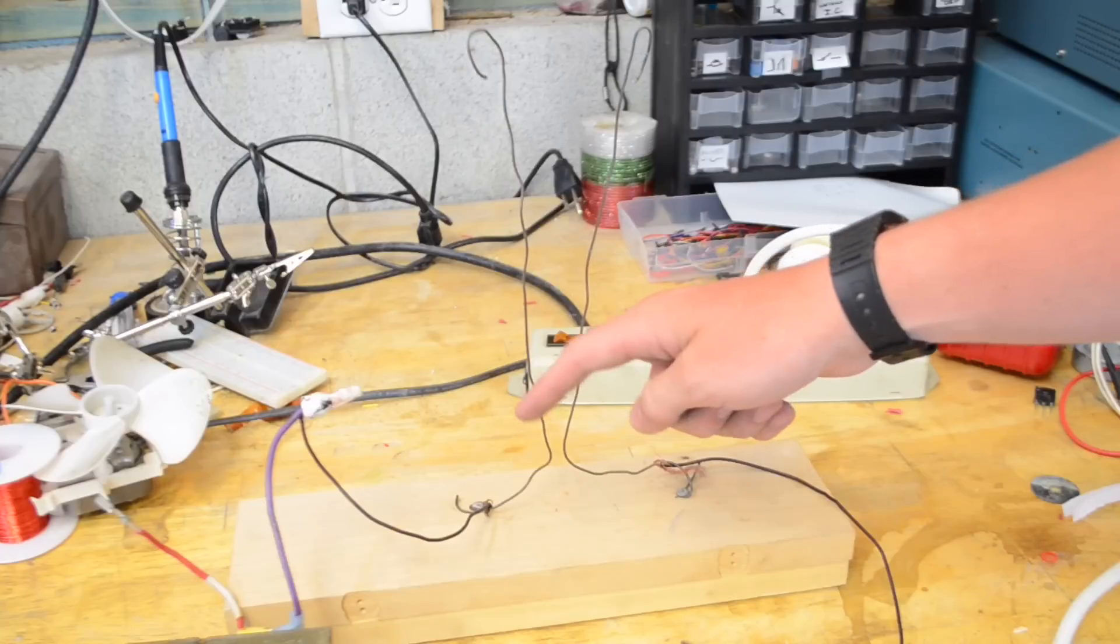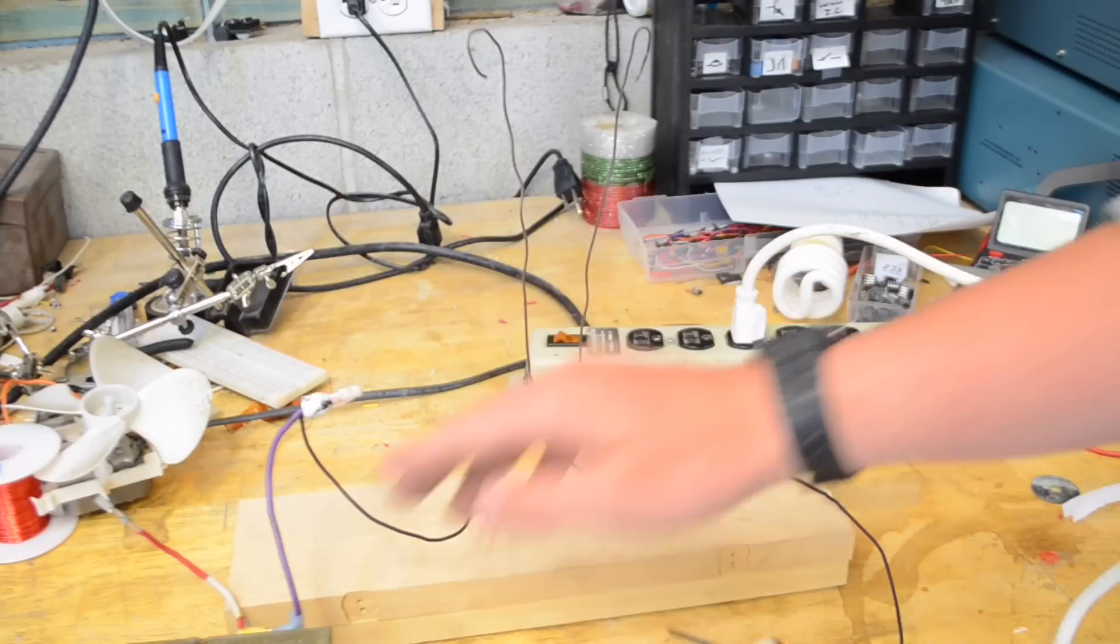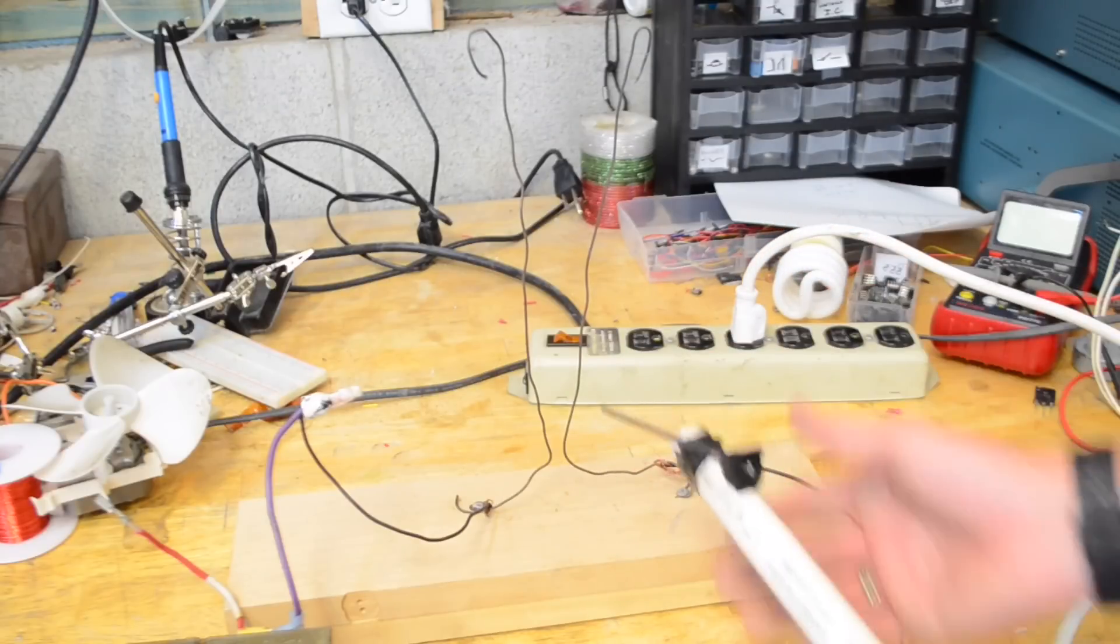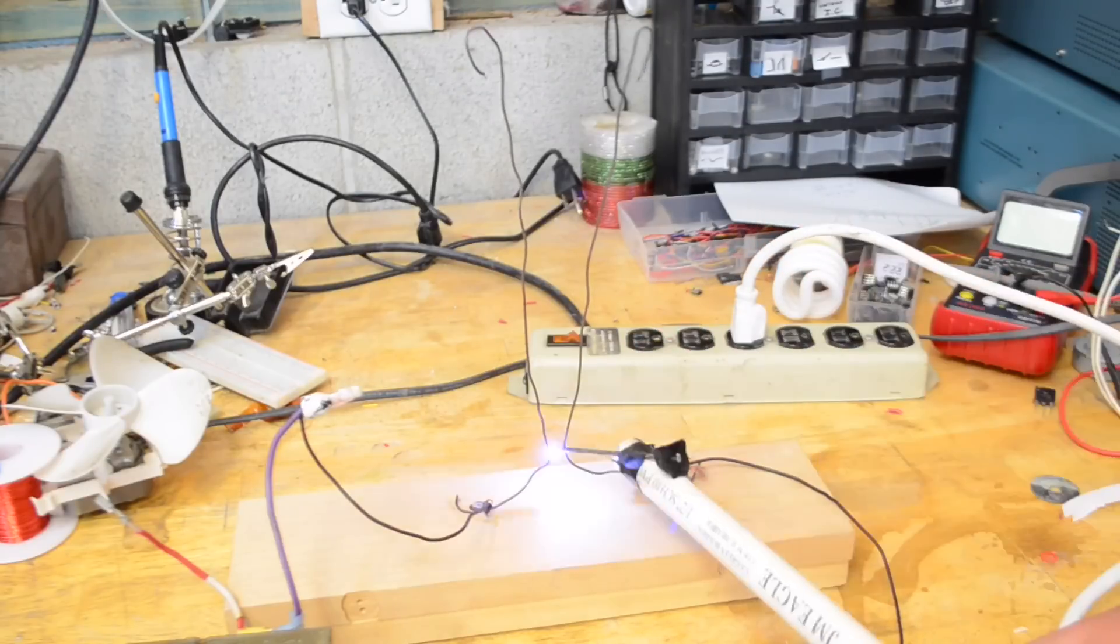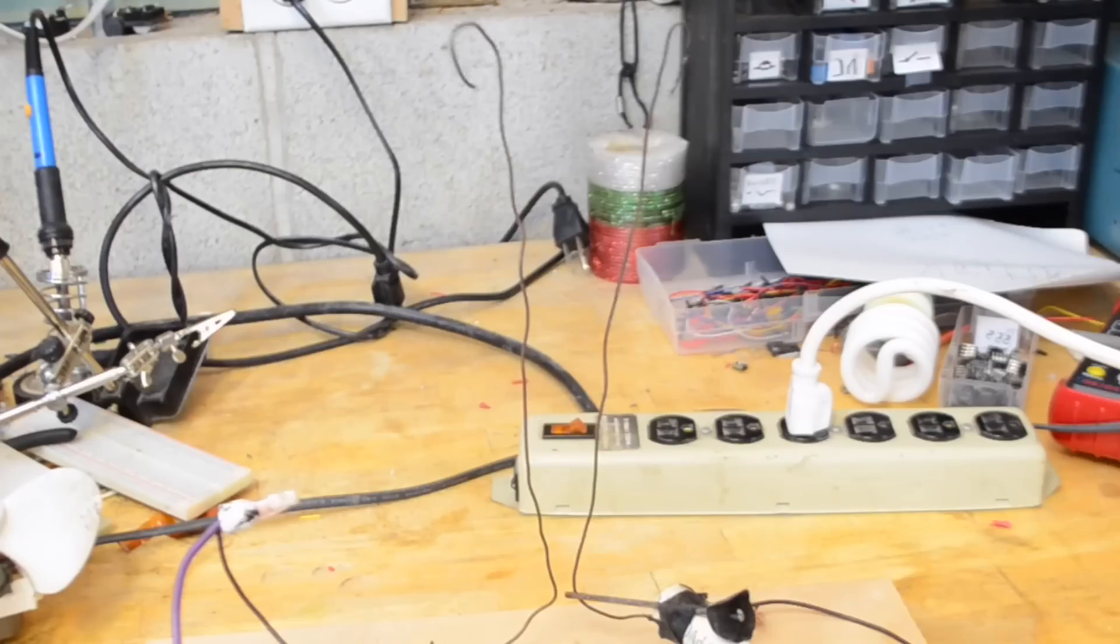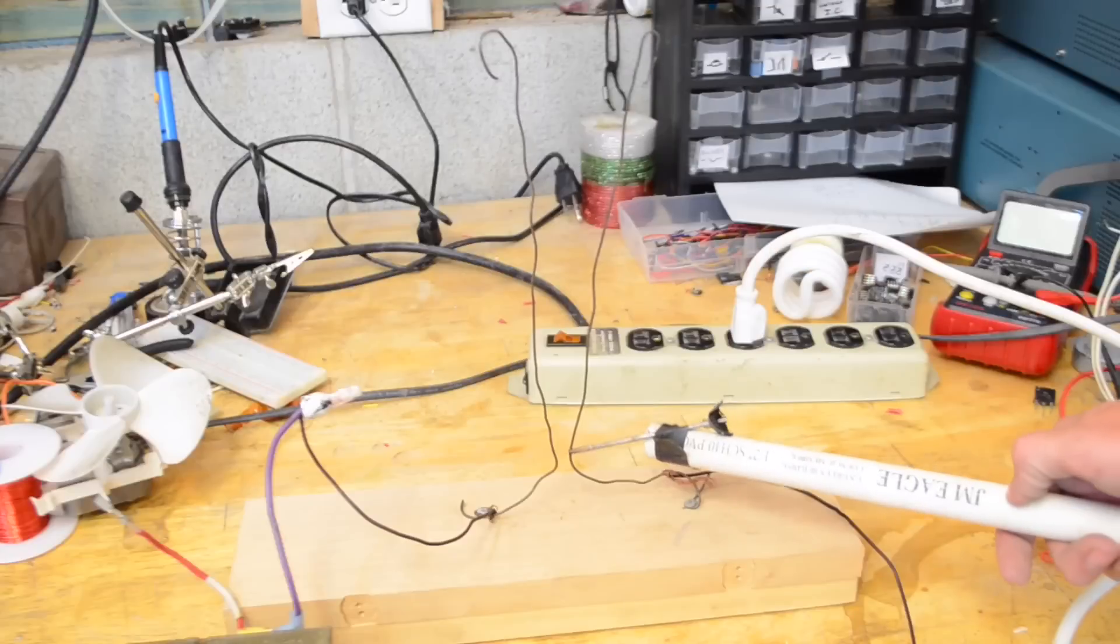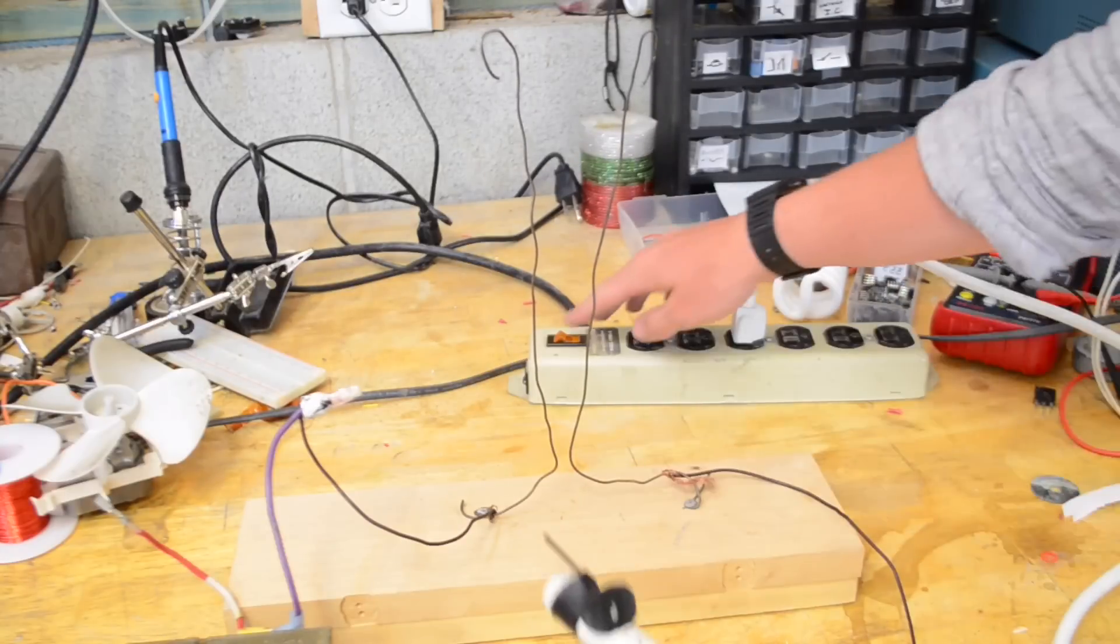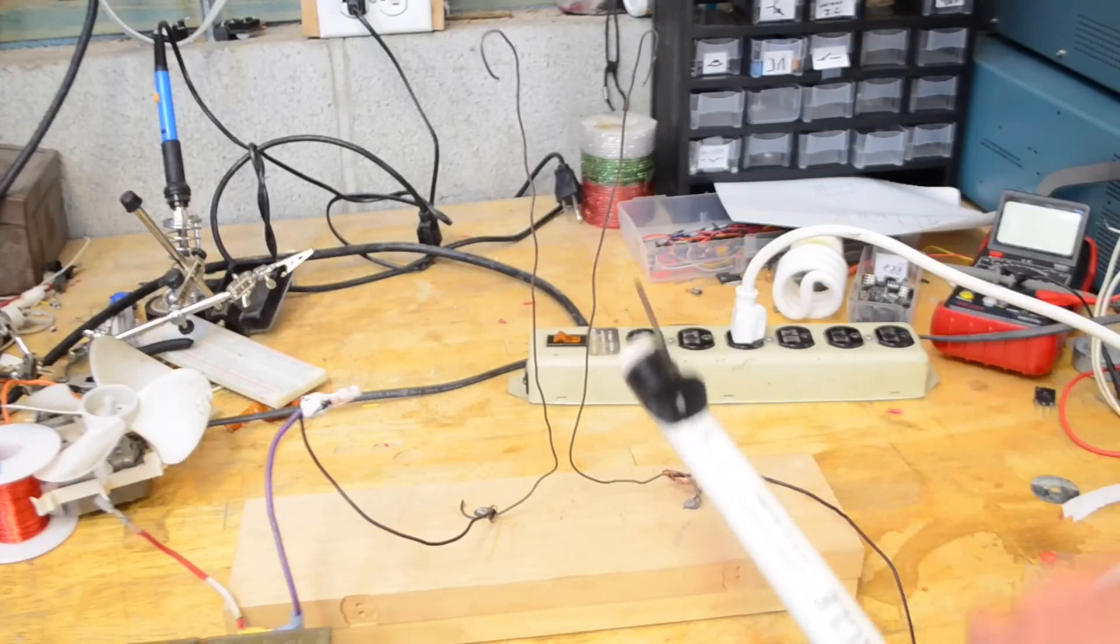Now this microwave oven transformer, more than anything else I show you today, is going to be the most dangerous, because at 2000 volts, it's also an extremely high current. And so a touch to this one will probably be fatal. Since it's only 2000 volts, there's no real way to get it to self-continually climb the ladder. But since it's such high power, you could make a really tall Jacob's Ladder with this.